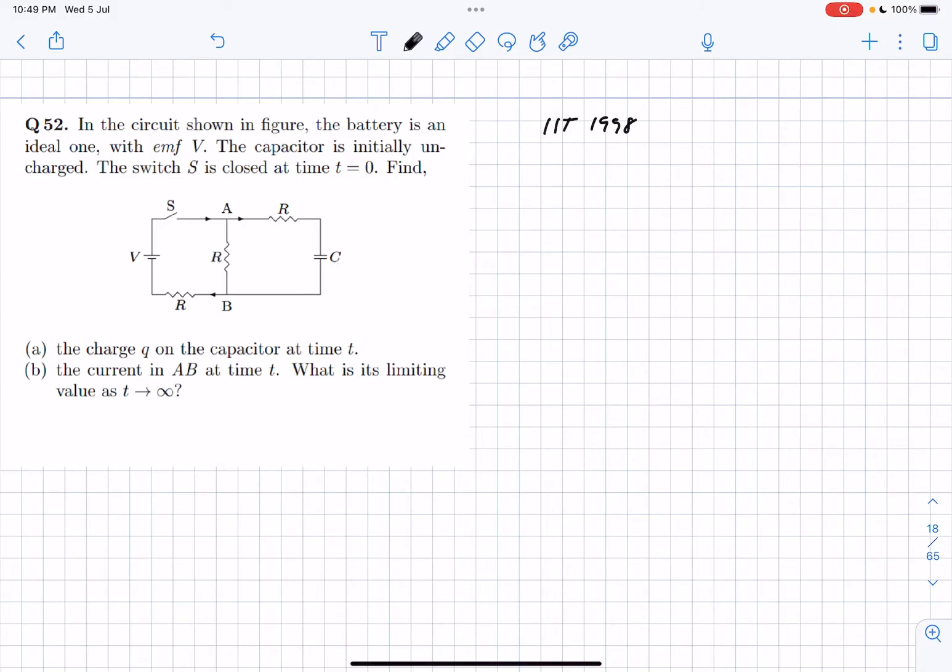For those who don't know the conventional method, I'll explain it real quick. The problem is that the switch is closed at time t equals 0 and we have to find the charge as a function of time on the capacitor.